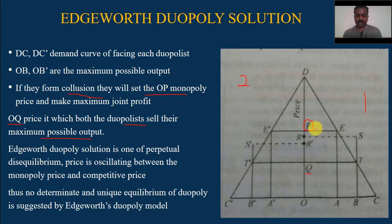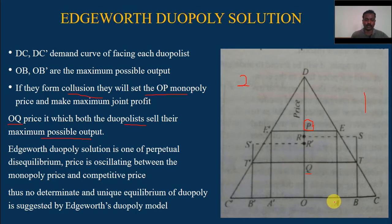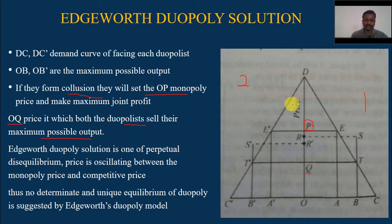Now, assume that the two duopolists happen to charge the monopoly price OP1. Producer 1 and 2 will produce and sell OBE of output — a lesser amount. Suppose one producer thinks of revising his price policy. Producer 1 believes that Producer 2 will keep his price unchanged at the monopoly price, regardless of whatever price Producer 1 himself charges.